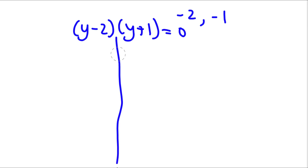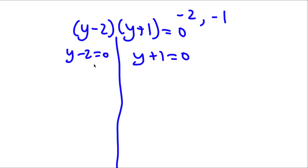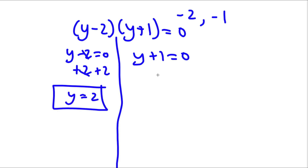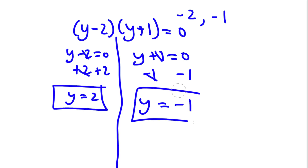So now this gives me two equations. I have y minus 2 is equal to 0 and I have y plus 1 is equal to 0. For y minus 2 equals 0, I can simply add 2 on both sides and I get y is equal to 2. And for y plus 1 equals 0, I can simply subtract 1 on both sides and I have y is equal to negative 1.